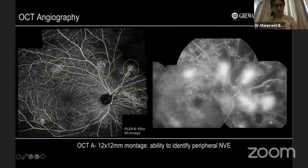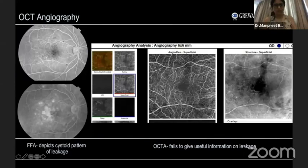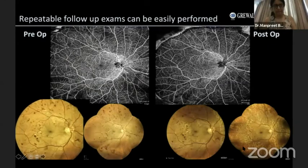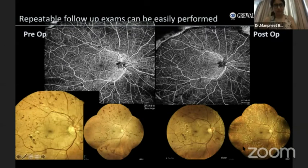A 12 by 12mm montage image of OCTA has the ability to identify almost all peripheral NVEs. Repeatable follow-up exams can be easily performed. Color fundus image shows florid NVEs seen on the OCTA image as well. Post-laser OCTA did not pick up any NVE, confirming successful regression. Another example shows drastic reduction in the caliber of NVE with pruned edges.